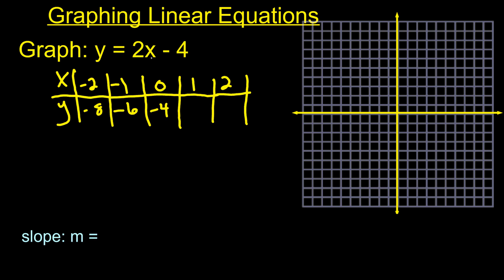Plug in 1. 2 times 1 is 2. 2 minus 4, negative 2. Plug 2 in. 2 times 2 is 4. 4 minus 4 is 0.